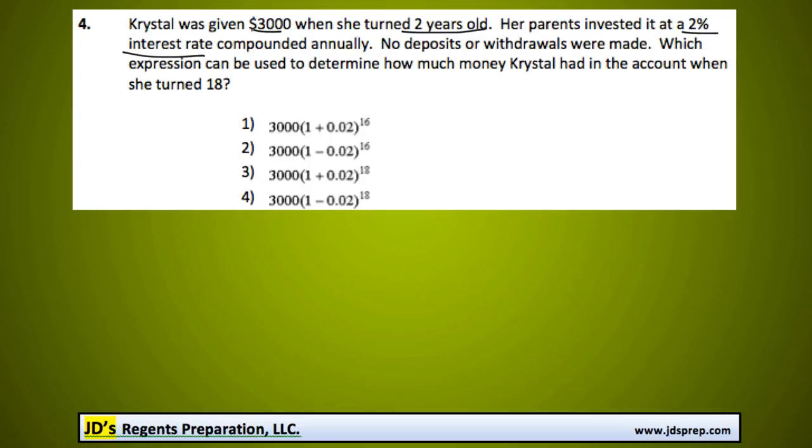Now we're going to use the compound interest formula to help us here. So the final amount is equal to the principal amount times 1 plus i, which is our interest rate, to the power of n, n being the number of years.